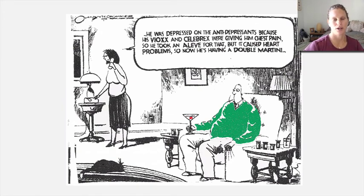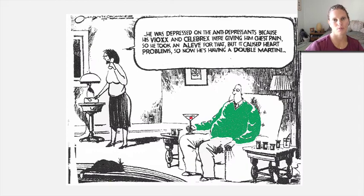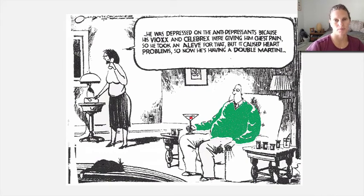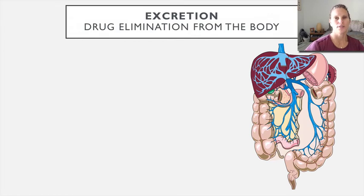Here's a cartoon illustrating a patient who was depressed on antidepressants, whose Vioxx and Celebrex were causing chest pain, so he took an anti-inflammatory that caused heart problems, and now he's having a double martini. It's funny but illustrates an important point: many people are on more than one medication, which creates many of these alterations to metabolism to think about.